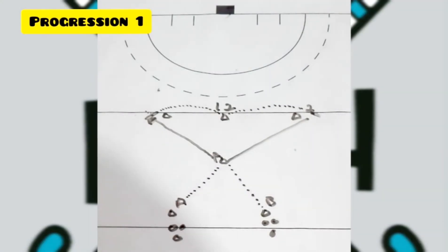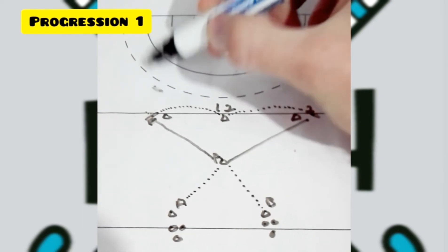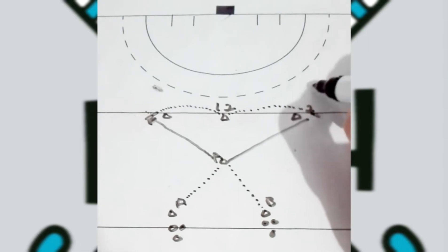For a progression of this drill, you as a coach can put an object over here. It can be a stick, it can be a ladder, it can be a little jumping step that you go over.